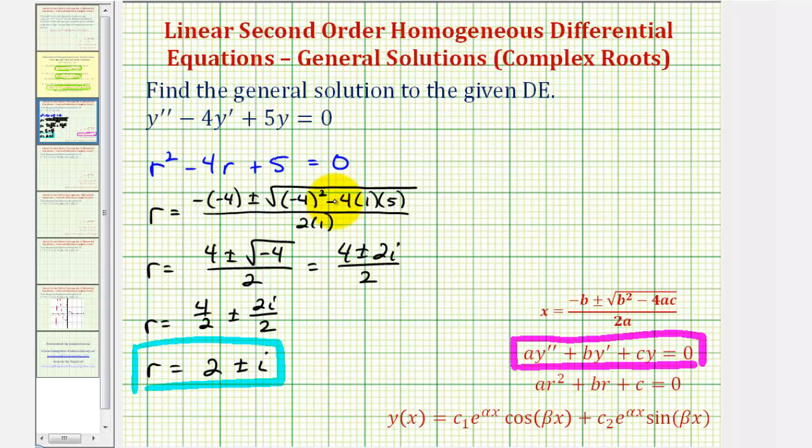So going back to our example, notice that alpha would be equal to 2, and because we have plus or minus i, this is the same as plus or minus 1i, beta is equal to 1.